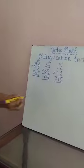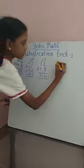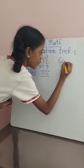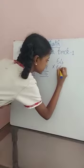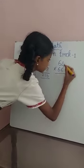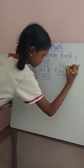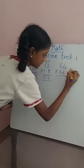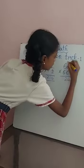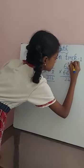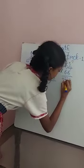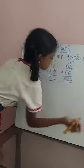64 into 66. 4 plus 6 is 10. 4 into 6 is 24. 6 into 7 is equal to 42. So this is the answer: 4224.